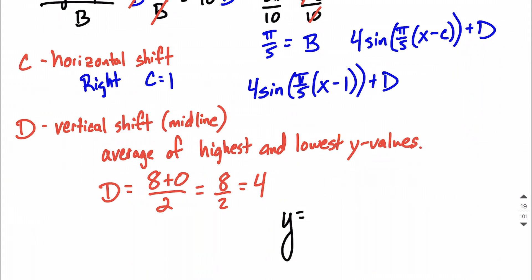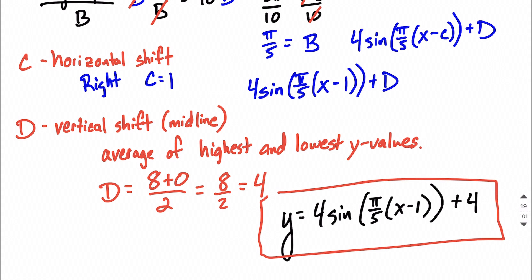So, final answer here, our function is going to be 4 times sine of pi over 5 and then inside our parentheses x minus 1 and then D, that value plus 4 that we just found and that will produce this exact graph that we were given from the beginning.